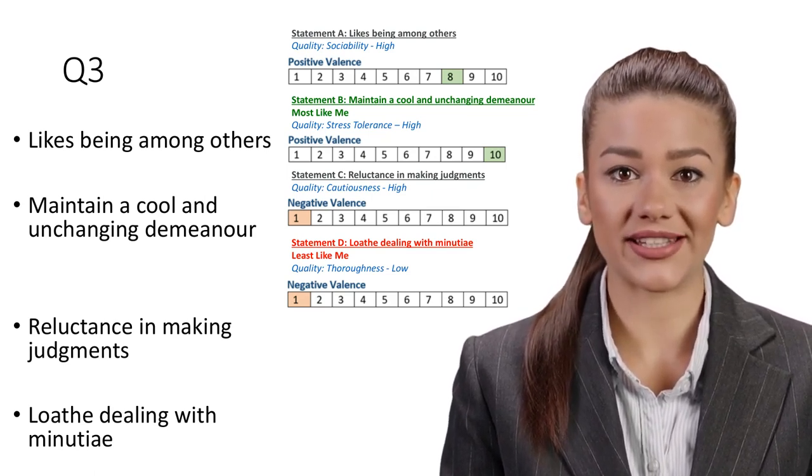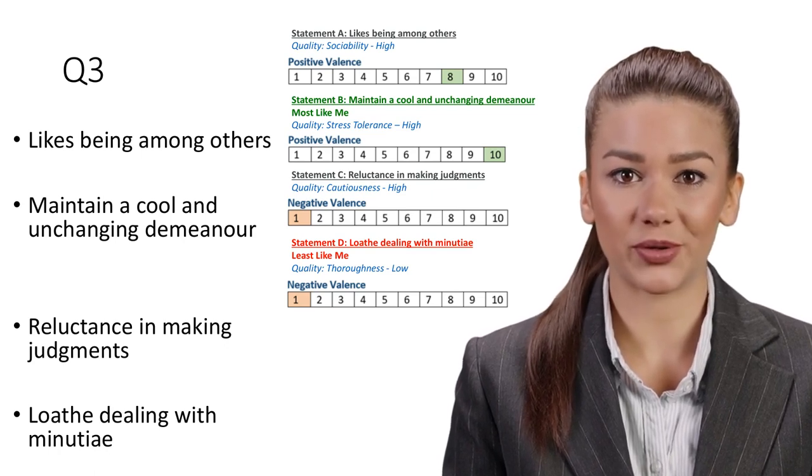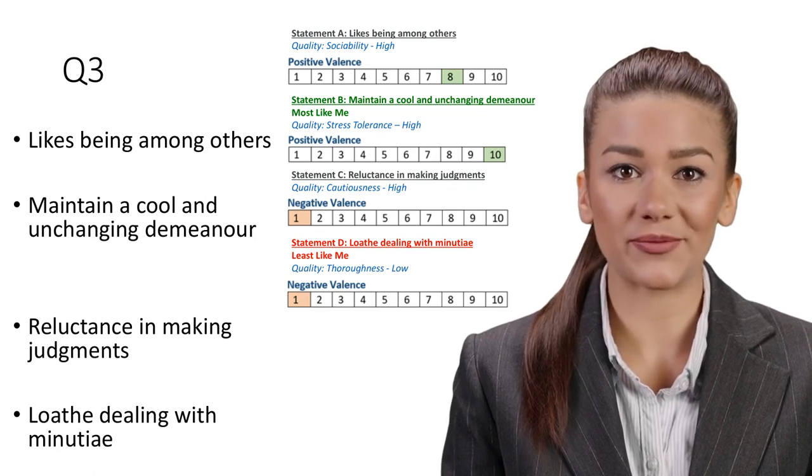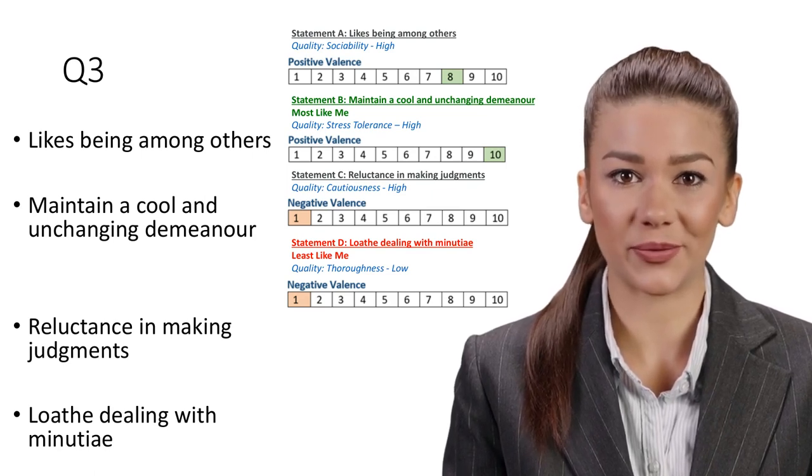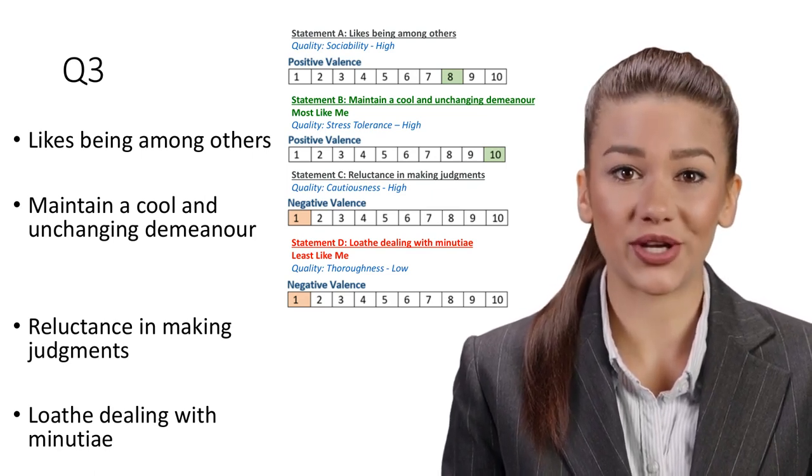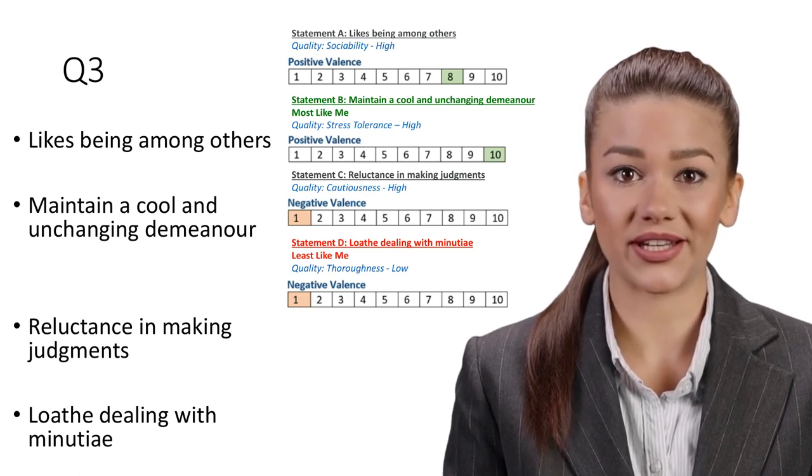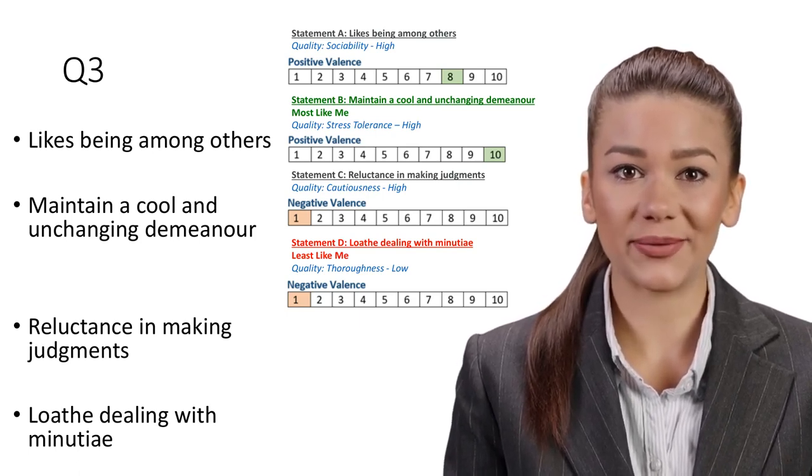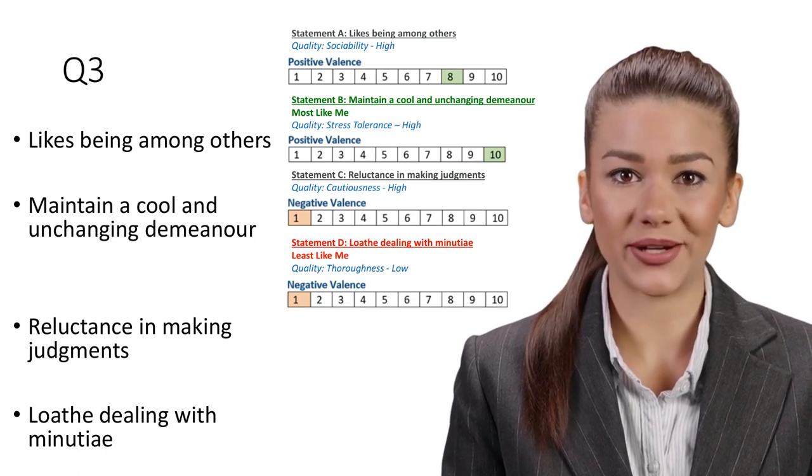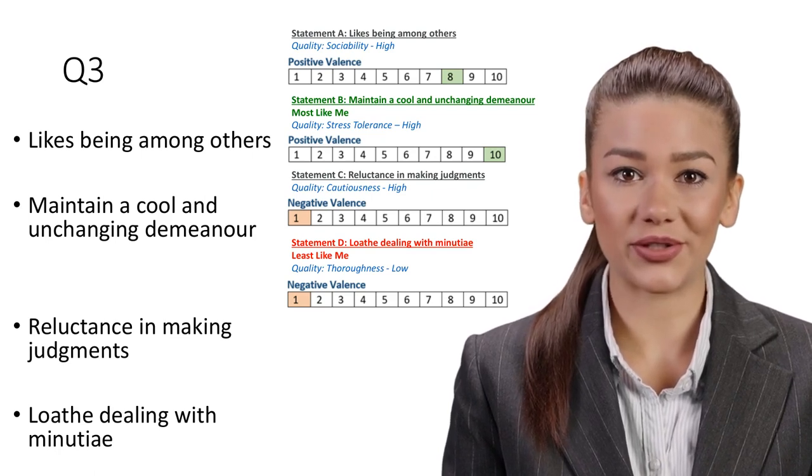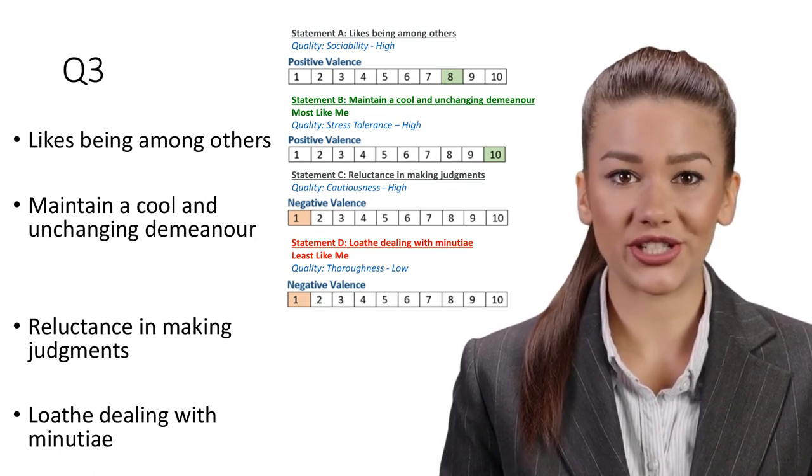Statement C: Reluctance in making judgments. Quality: Cautiousness, High. One common derailer of projects and new initiatives evolves from being overly cautious. When overanalyzing decisions or continually waiting for more and more input, decision-making is delayed until perhaps it is too late. This statement on cautiousness is equally negative to Statement D that covers thoroughness. This quality will thus be allocated points in other questions.